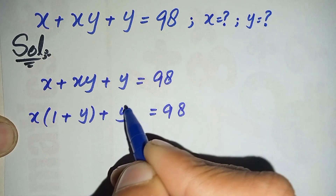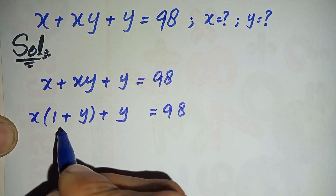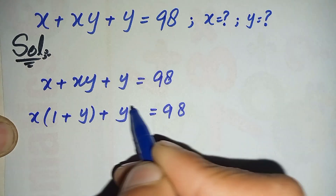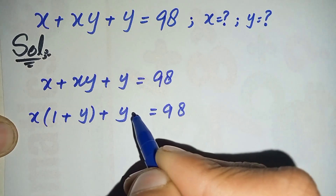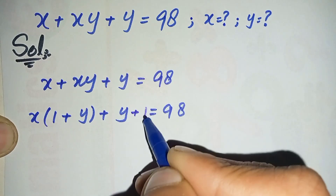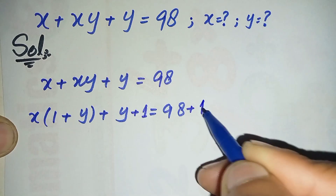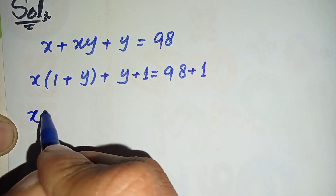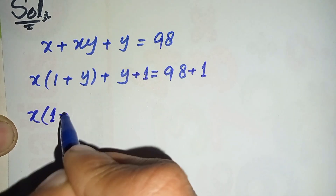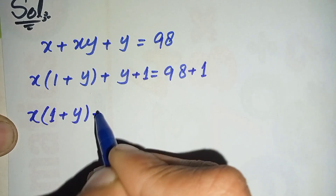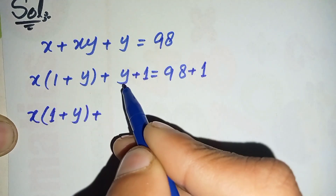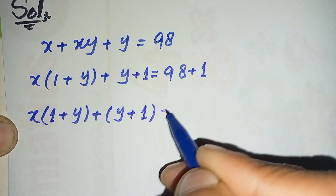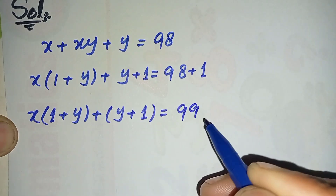Now I will try to make (1 + y) appear so we can factor it from the whole left-hand side. To do this, I will add 1 to both sides of the equation. So it becomes x·(1 + y) + (1 + y) = 99.